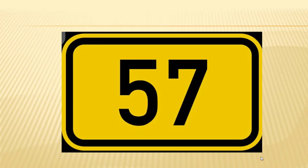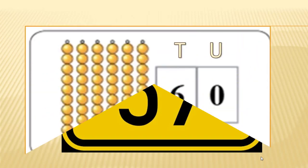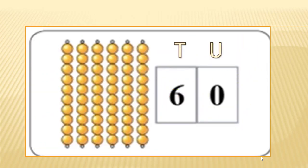So students, we have revised the numbers till 59. Today we shall learn more about the numbers from 60 till 69. 59 and one more is 60. Six tens together make 60 — we call it six tens.